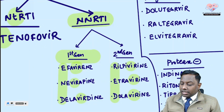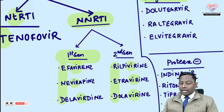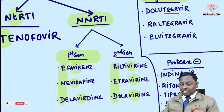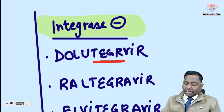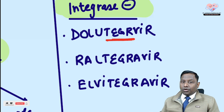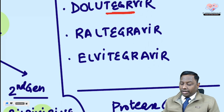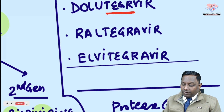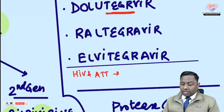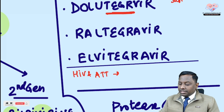Integrase inhibitors all have 'tegra' in their name: dolutegravir, raltegravir, elvitegravir. An important point: whenever treating HIV with anti-tubercular therapy (ATT), remember that dolutegravir and other integrase inhibitors are substrates of CYP3A4.